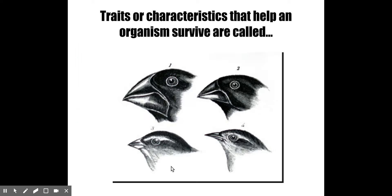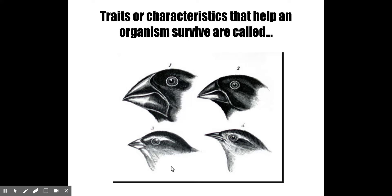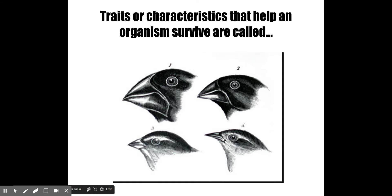Those traits or characteristics that help an organism survive we call adaptations, and you can see examples of adaptations in the finches found on the Galapagos Islands off the coast of Ecuador. These finches were well studied by Darwin during his trip around the world. There is great variation in the shape of their beaks, and the beak shape determines what kind of food each finch can eat. A finch with a strong thick bill can crack open nuts, while a finch with a long pointed beak can get insects crawling along the bark of a tree.